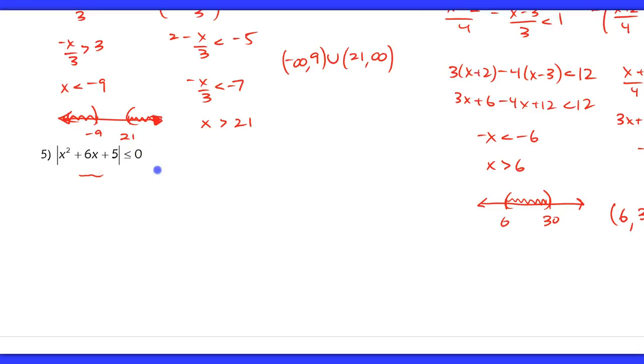If it's positive, it keeps it. If it's not, then it makes it positive. So this is impossible unless x squared plus 6x plus 5 were to equal 0. Okay, this is the only case in which this is possible.